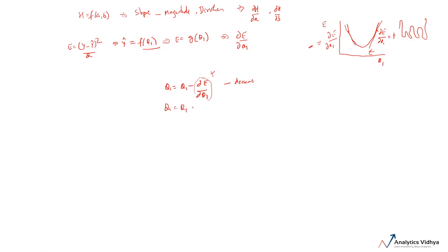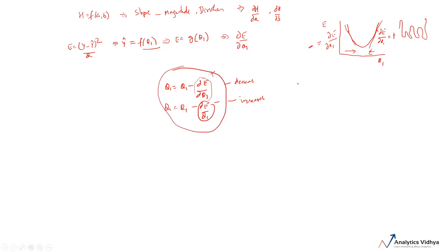What if ∂e/∂theta one was negative? Then negative minus a negative becomes a positive, so theta one increases — we move in the right direction towards the minimum. So no matter where you start, this error function with the help of these gradients enforces that you reach a minimum. This update equation is the gradient descent algorithm: we find the change in error with respect to the independent variable theta one and use it to reach the minimum of the error function.